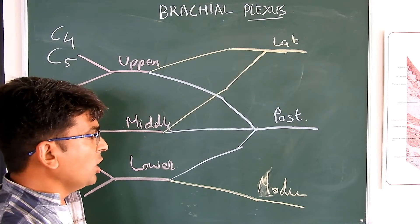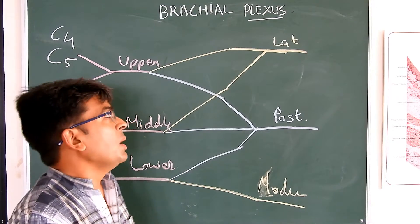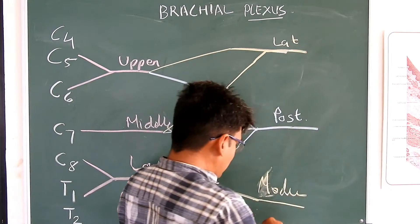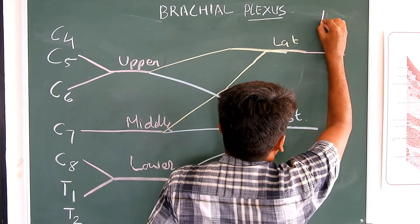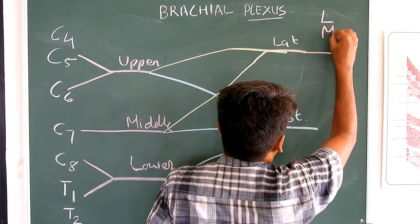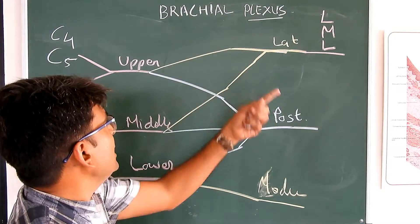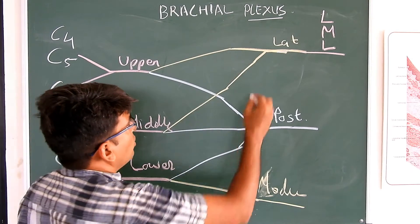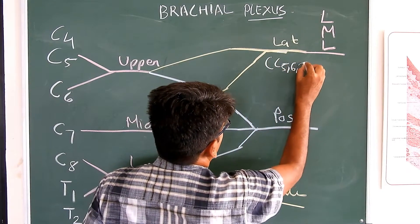After the cords come the branches. The branches of the lateral cord can be remembered with the mnemonic L-M-L. The lateral cord is formed by C5, C6, and C7, so the root value of the lateral cord is C5 to C7. L is for the lateral pectoral nerve, M for the musculocutaneous nerve, and L for the lateral root of the median nerve.